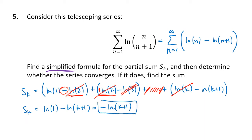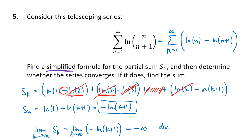So the simplified formula for s sub k is negative ln(k+1). To determine if the series converges, we take the limit as k goes to infinity of s sub k. The limit as k goes to infinity of negative ln(k+1): since ln of something going to infinity also goes to infinity, this limit equals negative infinity. So this series diverges, because the limit of the sequence of partial sums does not converge to a single number — in this case it diverges to negative infinity.